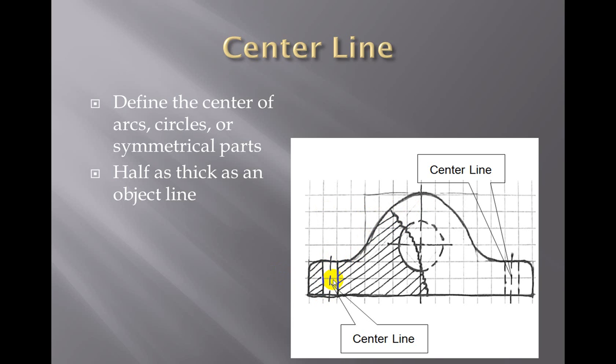Section lines are often used to show where material is cut away. Sometimes there are protrusions to an object that will obstruct the viewing of the rest of the object, so we may have to cut an object in order to show the inside detail of the part. Whenever a part has been cut off, we draw these diagonal section lines in order to show that you're missing the frontal part of the object.